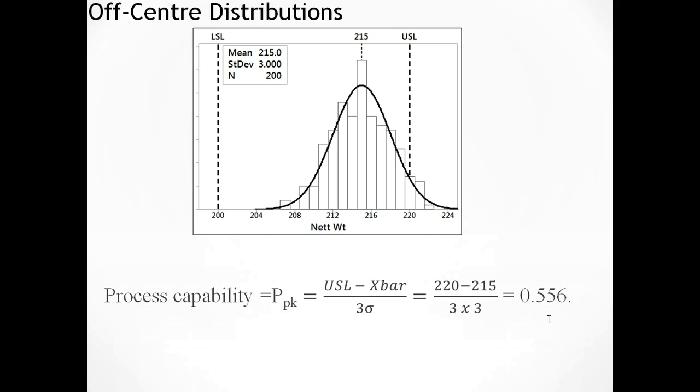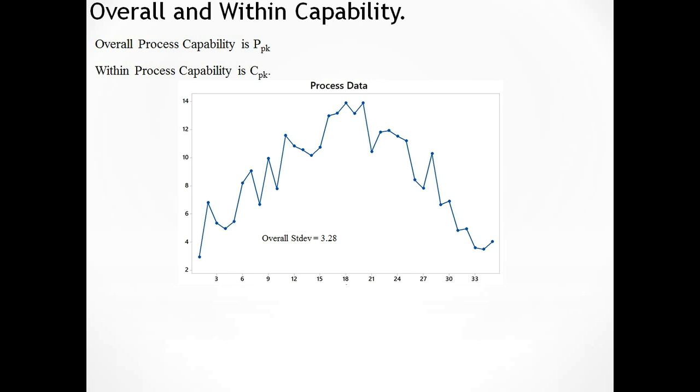But if you see a PPK value less than one, you know that your process is making off spec parts. And for the last section of this video, we said we're going to look at overall and within capability. So as I said before, overall capability we use PPK. And within process capability we use the symbol CPK. So just to explain the differences. I've made up some process data and shown it in a time series plot.